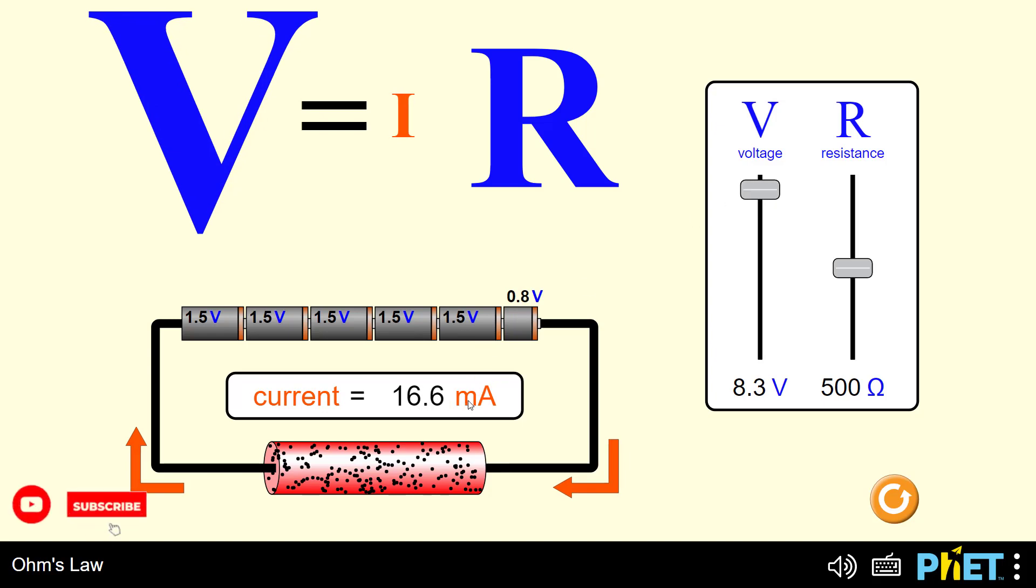The first thing we learned from the simulation is that whenever the voltage increases, the current increases, and whenever the voltage decreases, the current decreases. The relationship between current and voltage is a direct relationship.